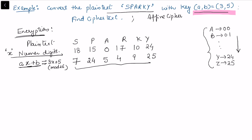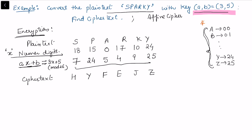With these cipher digits, we look up the corresponding letters from the standard table: 7→H, 24→Y, 5→F, 4→E, 9→J, 25→Z. So the cipher text corresponding to 'sparky' using key (3, 5) is H, Y, F, E, J, Z.